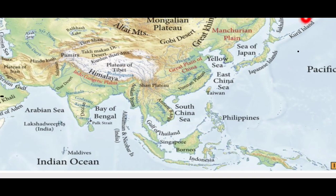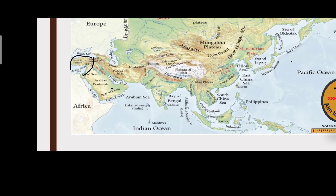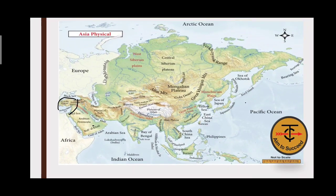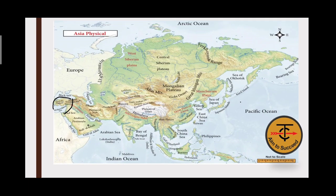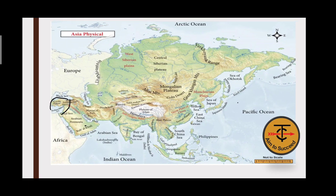Always keep in mind that plains are formed by river deposition. China's plains come from the Yangtze and Xi rivers; the Manchurian Plain from the Amur River; Mesopotamia from the Tigris and Euphrates. Understanding these river-plain connections will help you with the physical map of the world.